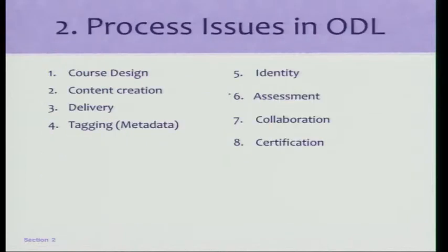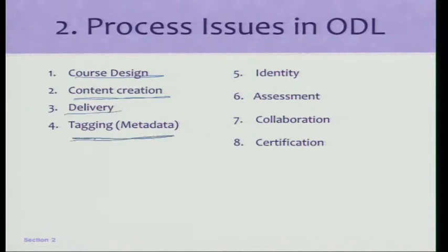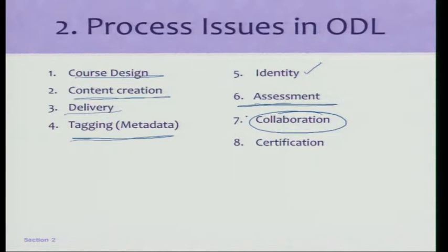What are the process issues in an online course? I have organized them into eight categories. The first is how the course is designed, then about content creation and delivery. There is an issue about tagging the course, identity management issues, assessment — how do you conduct exams and tests — a collaborative aspect, and then certification issues. Let us look at each one of them.